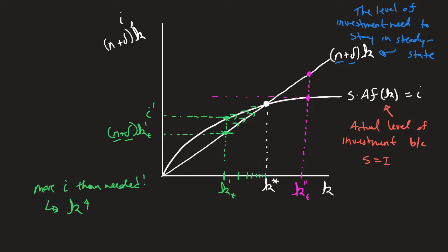What do we notice? Well, we notice the level of actual investment, here's my i double prime, is lower than what we would need to stay in steady state. So this is my n plus delta kt double prime.